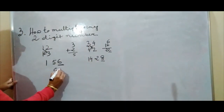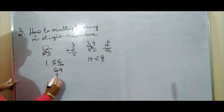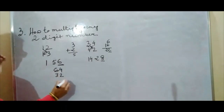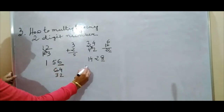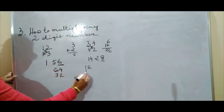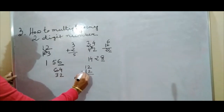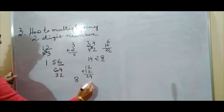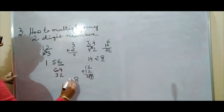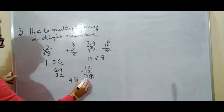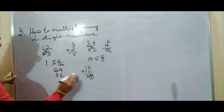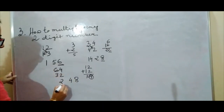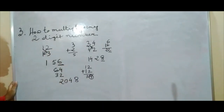Then 64 × 32: units digits 4 × 2 = 8. Cross multiply: 6 × 2 = 12 and 4 × 3 = 12; add: 12 + 12 = 24. So 4 goes here and carry 2. Then tens digits: 6 × 3 = 18 plus carry 2 = 20. Answer is 2048. Very very simple.